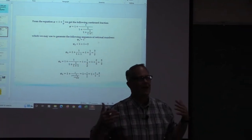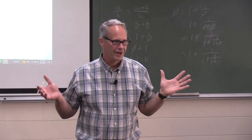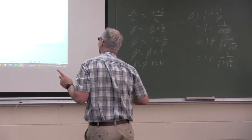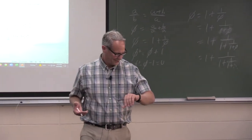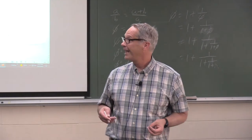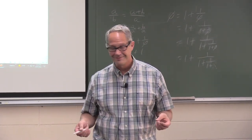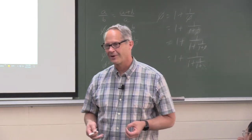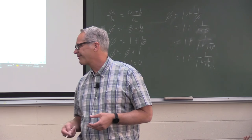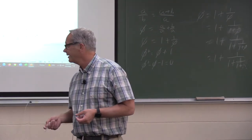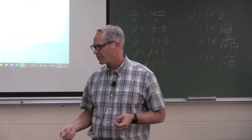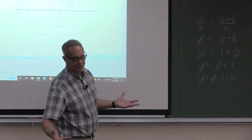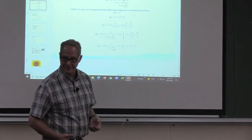Any real number can be written as a continued fraction — irrational, rational, whatever. A rational number is one that can be written as a ratio of two integers, and its decimal representation either terminates or repeats. Irrational numbers cannot be written as a fraction of two integers, and their decimal representation neither terminates nor repeats. Phi involves the square root of five, so it's irrational.